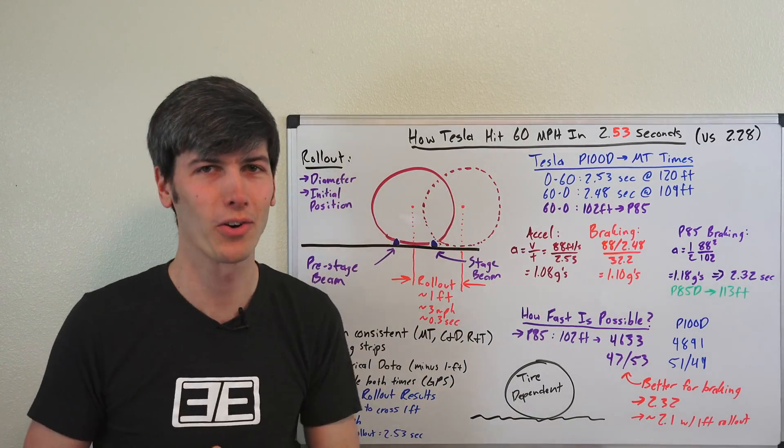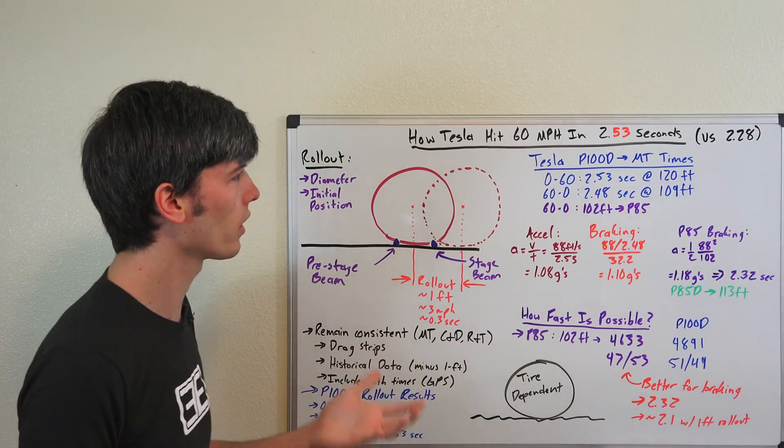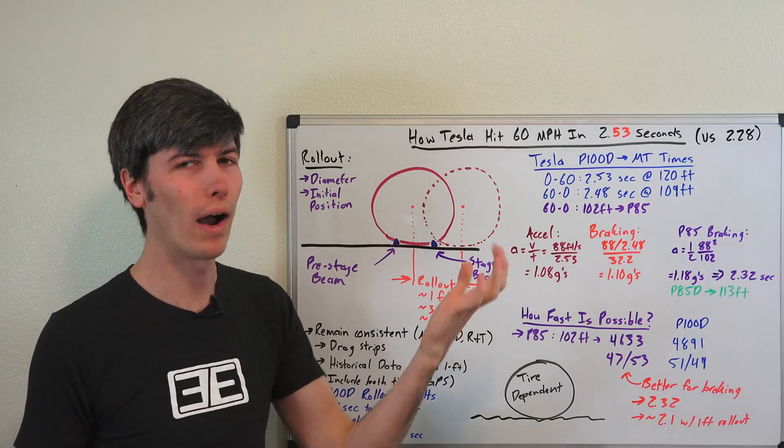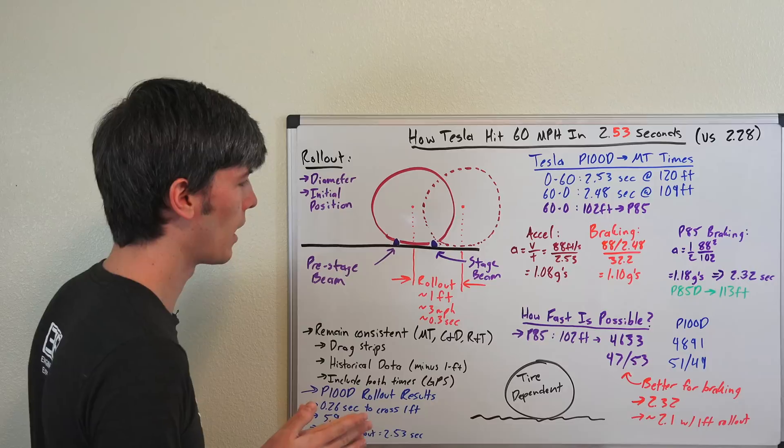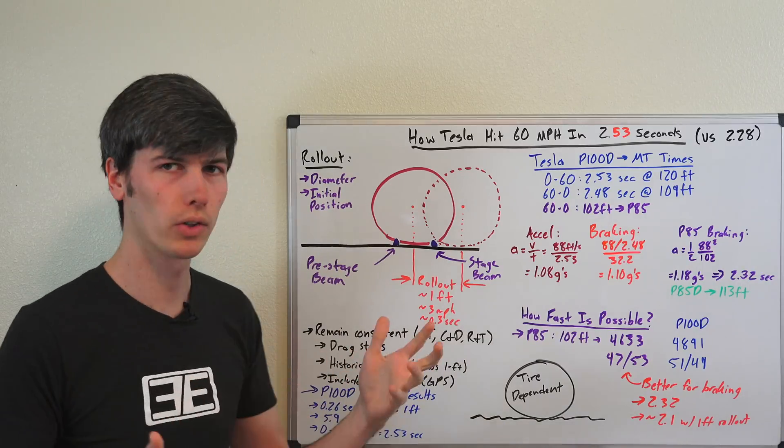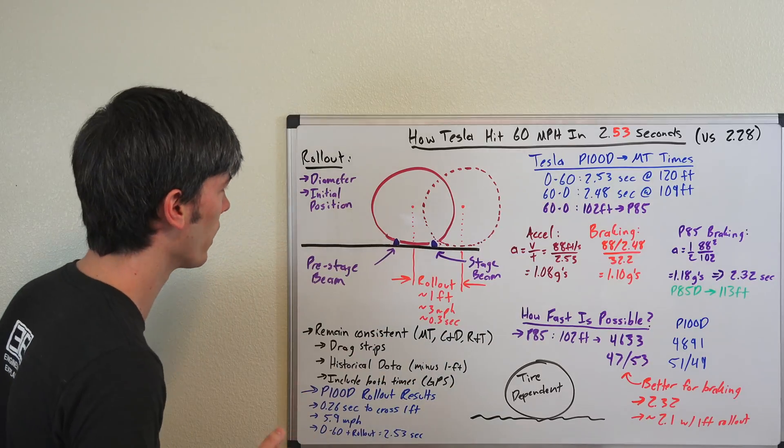And so they actually write all this in their article. I should have fully read it before publishing a video on it. But regardless, it's something I want to talk about here and talk about how rollout works, why the industry uses it, and how impressive this P100D actually is, regardless of which number we're looking at, 2.53 versus 2.58.